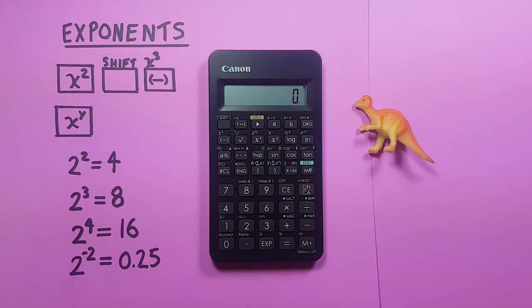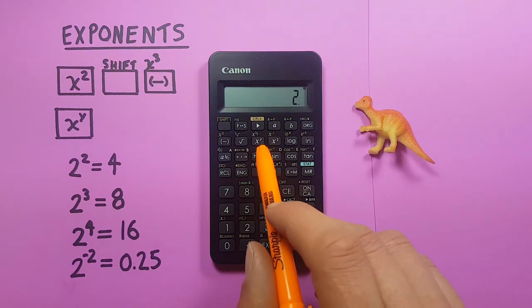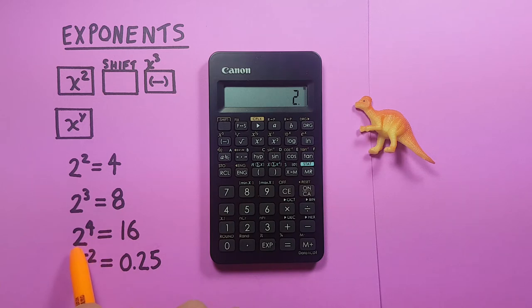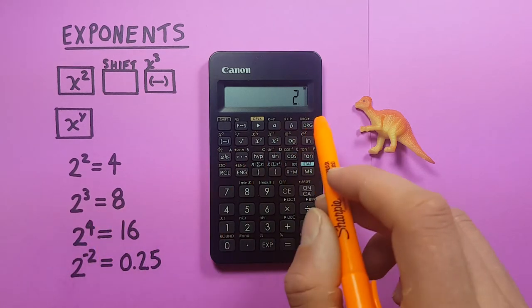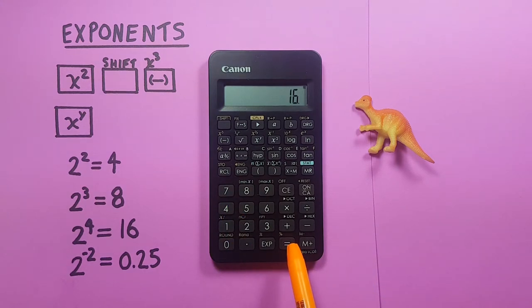What if we want to find an exponent that's not a square or a cube? Well, we would place it on the screen and then use the x to the y button. So, if we wanted to find 2 to the power of 4, we have 2, x to the y, 4, equals 16. There we go.